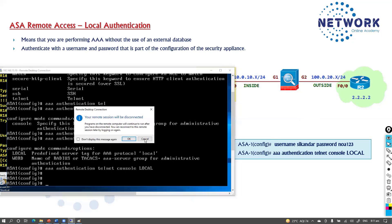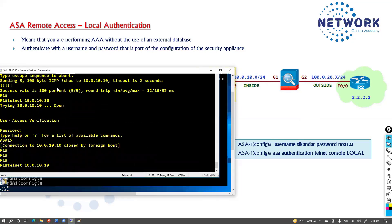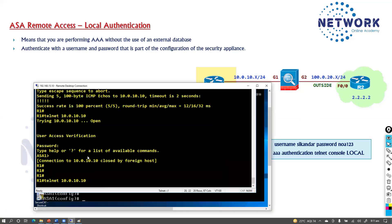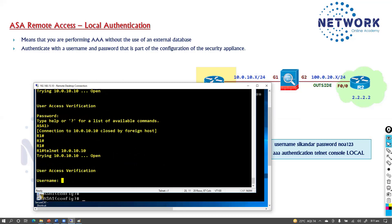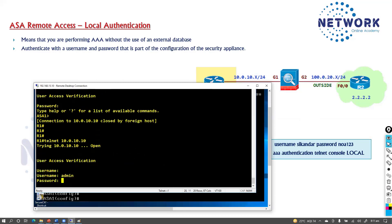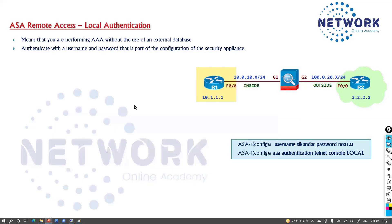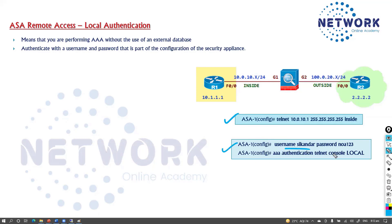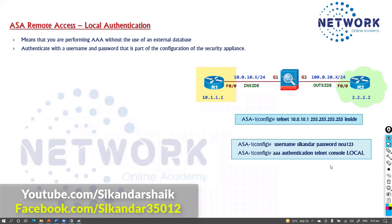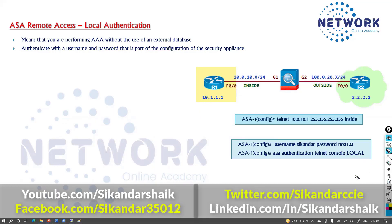Once these commands are enabled, if I go back to my router and initiate a telnet connection to the ASA from the permitted network, it will now prompt for a username and password — whatever username and password I created. In production, local authentication is common for small setups. Remember the steps: permit the network, create a user account, then define that telnet connections should use local authentication. If using external servers, the configuration differs slightly but the hierarchy remains the same — you specify an external server name instead of capital LOCAL.